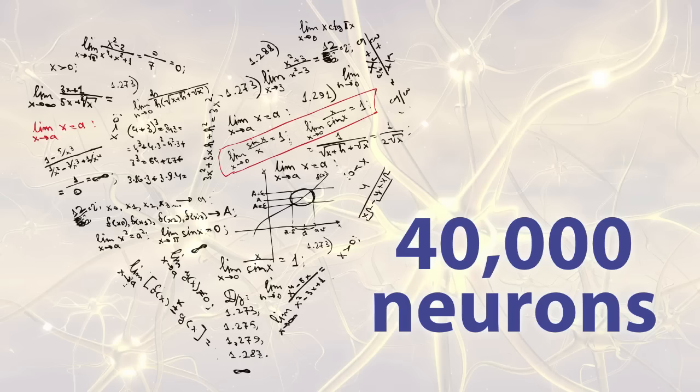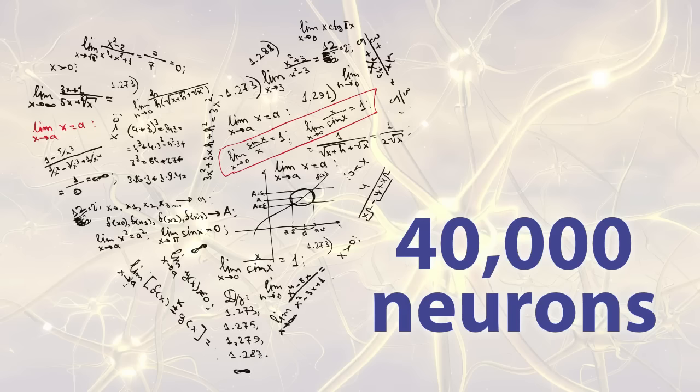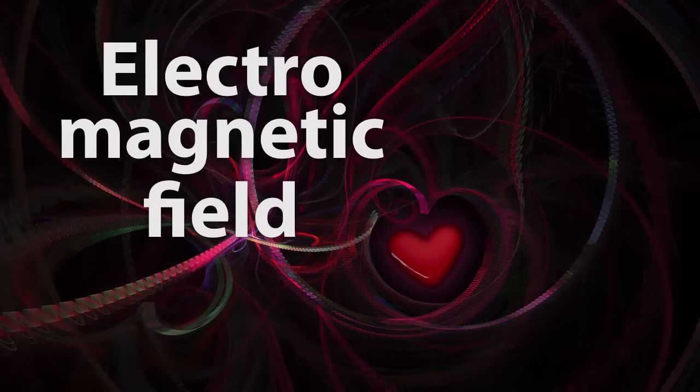The heart's electromagnetic field is also 5,000 times stronger than the brain's electromagnetic field. 50% of the heart's cells are neural and form their own neural network. This is what's commonly referred to as the intelligence of the heart.